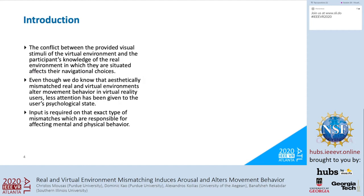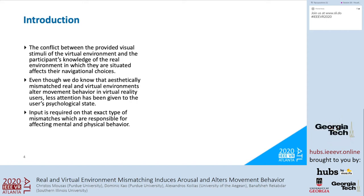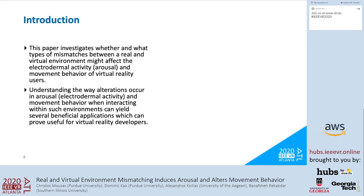It has been found that the conflict between the provided visual stimuli of the virtual environment and the participants' knowledge of the real environment affects their navigational choices. Even though we know that aesthetically mismatched real and virtual environments alter movement behavior, less attention has been given to the user's psychological state. This paper investigates whether and what type of mismatches between a real and virtual environment might affect the electrodermal activity and movement behavior of VR users. As a task, participants were asked to walk around the environment by simply following a provided path.